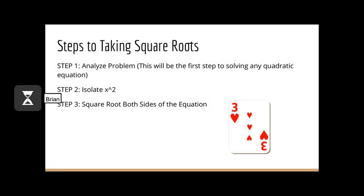Of all the methods we have, taking square roots has the least amount of steps, though it will also probably come up the least amount of times. Step 1 is to analyze the problem — this will always be the first step to solving any quadratic function. Step 2 is to isolate x squared. Step 3 is to square root both sides of the equation so that we can solve for x.